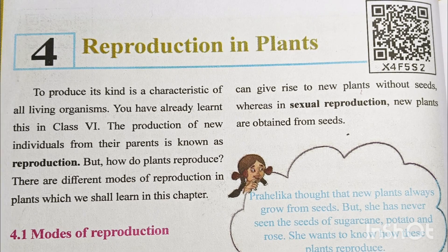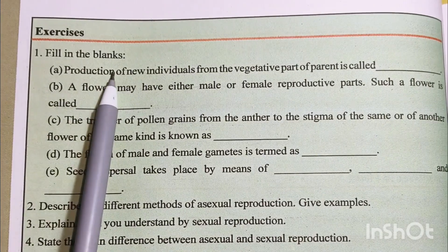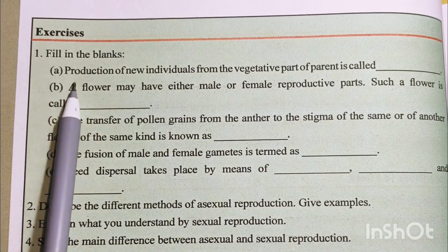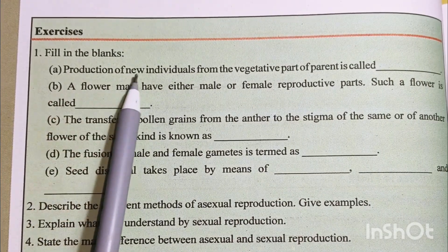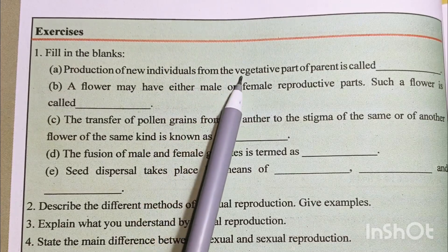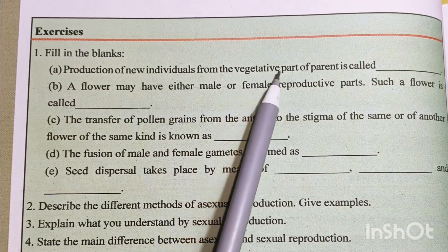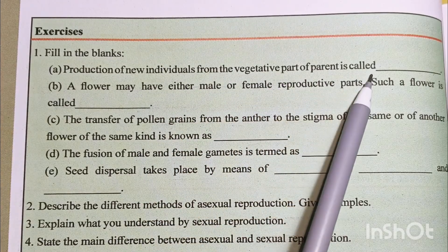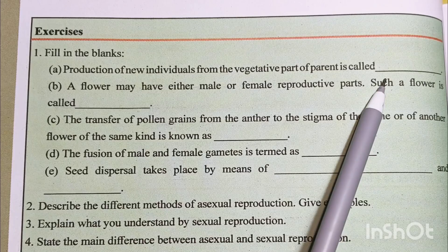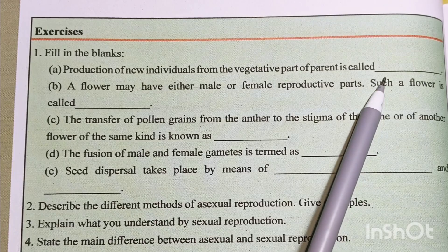I will ask you about the first question — fill in the blanks. Number A: production of new individuals from the vegetative part of parents is called vegetative propagation.